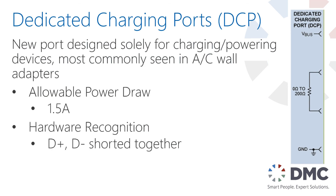Lastly we have the dedicated charging port, which is what you typically see in wall warts — any sort of power-only USB connection for charging your phone or powering a device. It supports up to 1.5 amps, and obviously there are things outside the spec that can supply even more. This port is detected by shorting the two data lines together — it's a charging-only port, so D+ and D- are shorted, which is how you indicate it is a dedicated charging port.